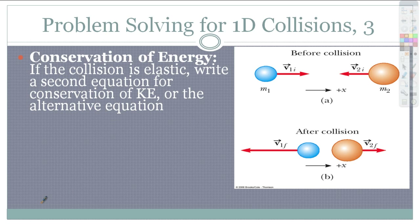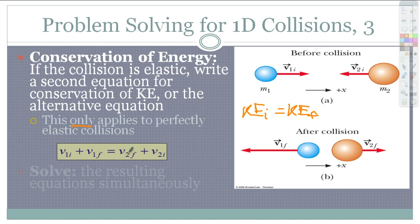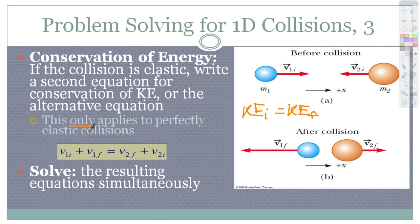If the collision is elastic, we write a second equation for conservation of kinetic energy — KE before equals KE after. This only applies to perfectly elastic collisions, things that bounce off completely with no sticking together. We basically just work with velocities and solve these equations simultaneously — solve one equation in terms of the rest of the stuff and plug it into our first equation.